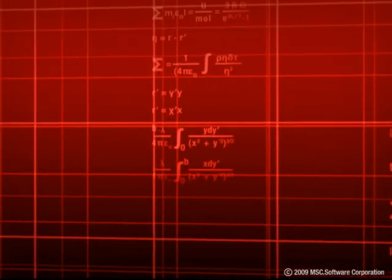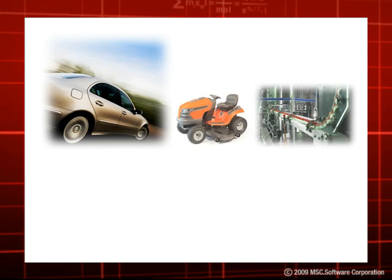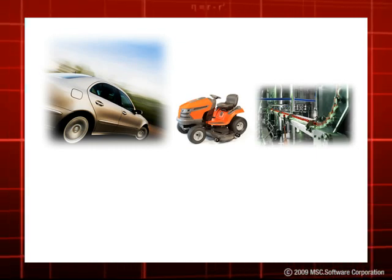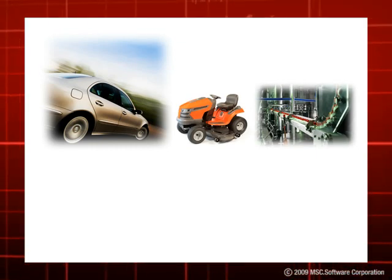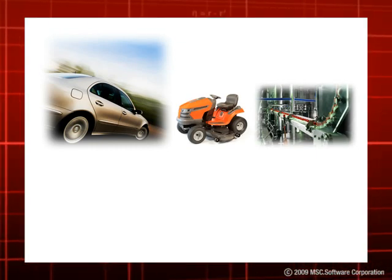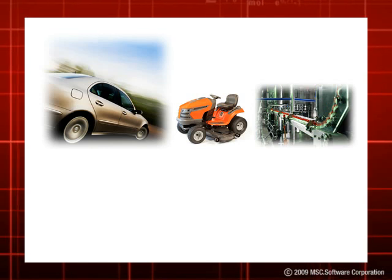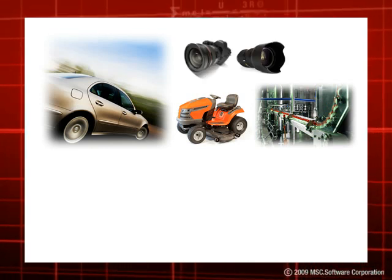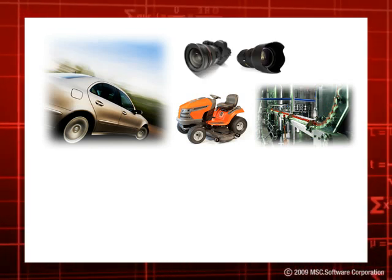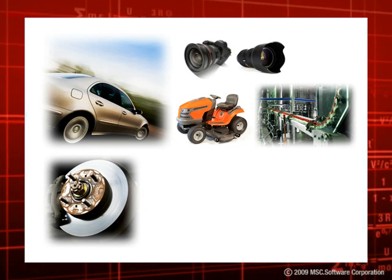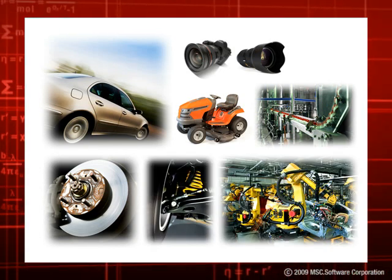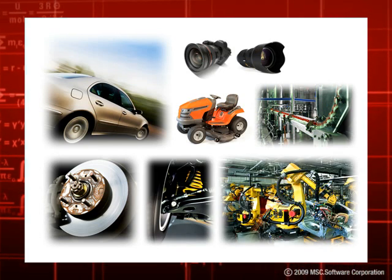Mechatronics systems are becoming increasingly significant in many industries today, such as the automotive and manufacturing industries. Typical examples include auto-focusing cameras, engine management systems, ABS, active suspension control, stability control, and industrial robots.